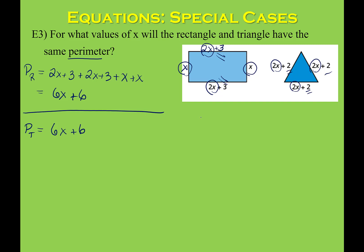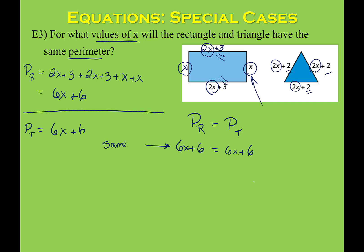I want to know when the perimeter of the rectangle equals the perimeter of the triangle. The rectangle's perimeter is 6x plus 6 and the triangle's perimeter is 6x plus 6. You can stop right here — these are the same on both sides, so they'll always be true. If we continue and subtract 6x from both sides, 6x minus 6x is 0 on each side, and we get 6 equals 6, which is a true statement — telling me there are infinitely many solutions.